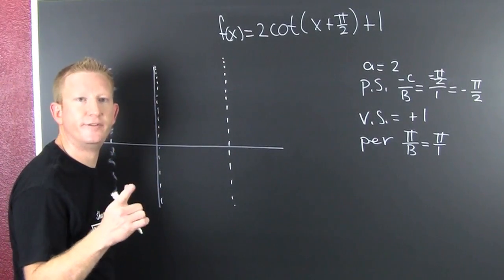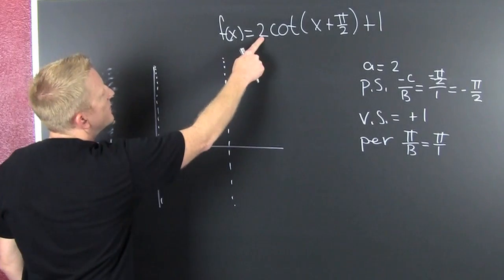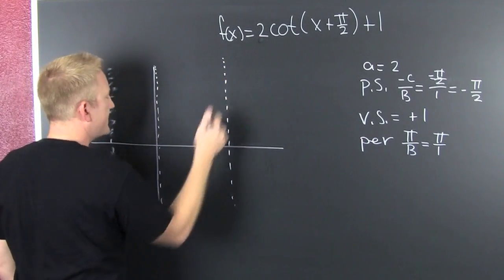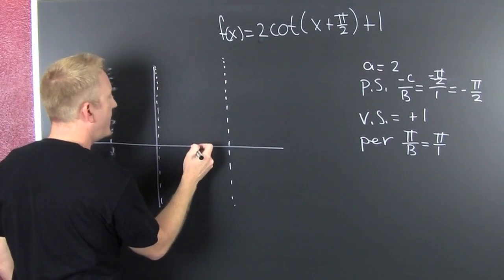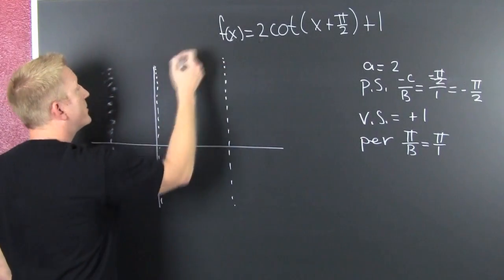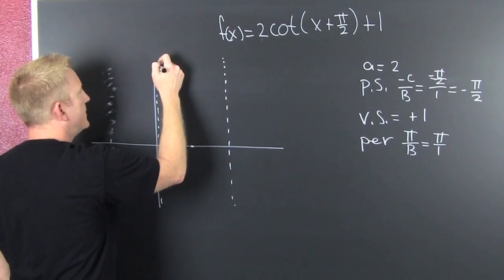Sketch it. Label it. Move it. I don't need to flip it, so I can sketch it — bam! My normal cotangent goes like this.